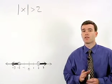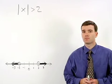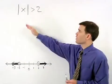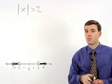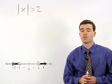Remember from the previous section that absolute value represents distance from 0. So if the absolute value of x is greater than 2, that means x's distance from 0 is greater than 2 units.